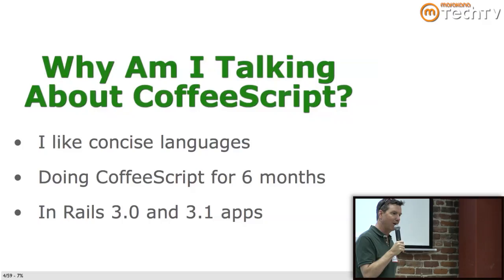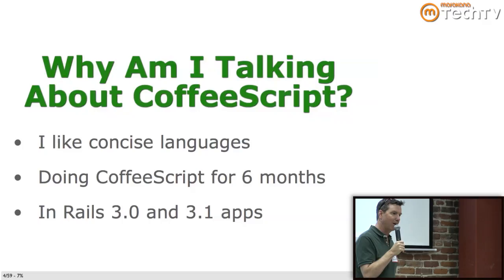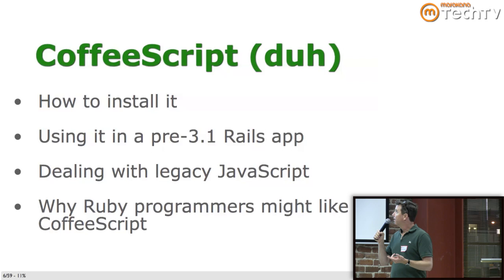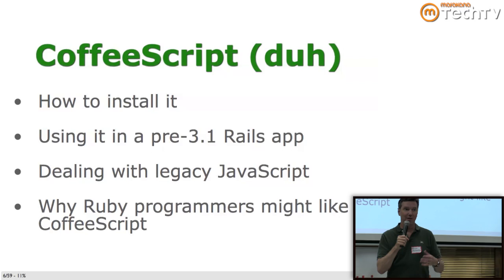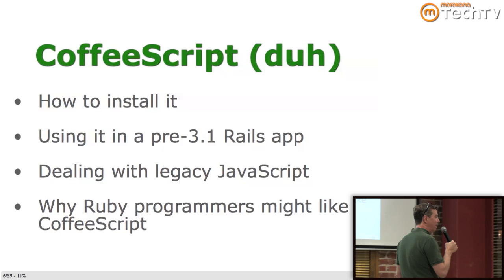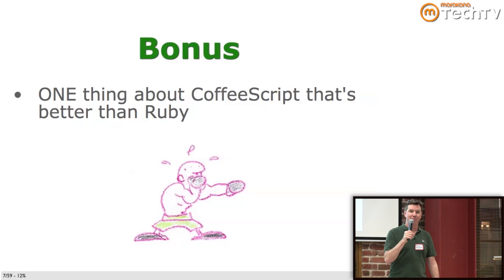I've been doing CoffeeScript in a Rails 3.0 app as well as a Rails 3.1 app. CoffeeScript is the new hotness — it's built into Rails 3.1, but you have to figure out how to get it into a Rails 3.0 app. So I'll show you how to do that: how to install it, using it in a pre-Rails 3.1 app, dealing with legacy JavaScript, why Ruby programmers might like CoffeeScript, and a bonus — one thing I like more about CoffeeScript than Ruby.